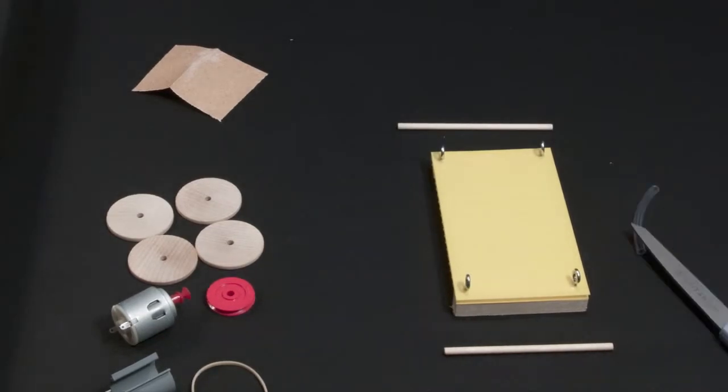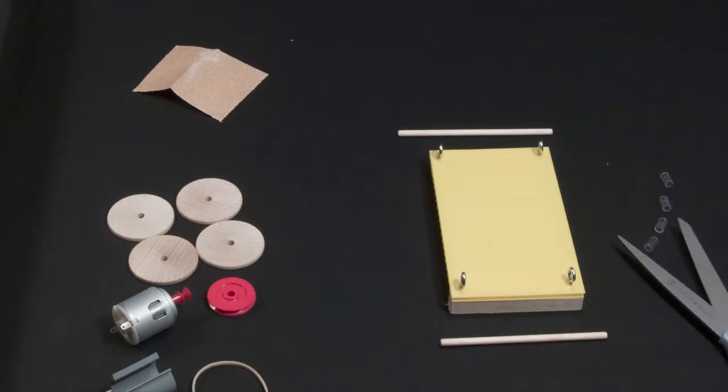Now get your piece of rubber tubing and use scissors to cut it into four pieces. Each piece should be about half a centimeter long, so that it will prevent the wheels from rubbing against the frame of the car.